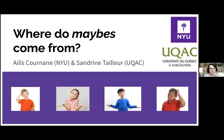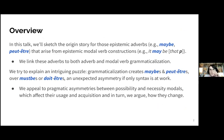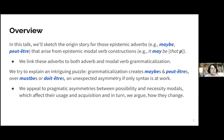This is work by myself, Elise Cornan, and my colleague Sandrine Taillard. In this talk, we'll sketch the origin story for epistemic adverbs like 'maybe' and 'peut-être' in French that arise from epistemic modal verb constructions along the lines of 'it may be that' followed by the embedded proposition. We'll link these adverbs to both adverb and modal verb grammaticalization pathways.